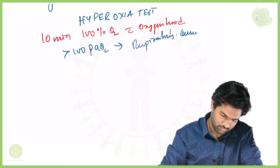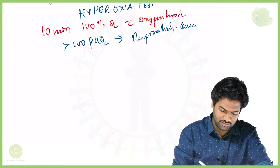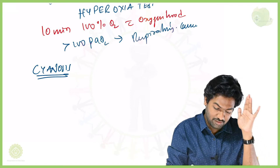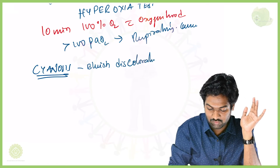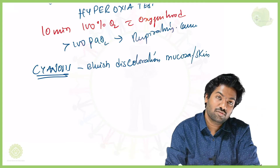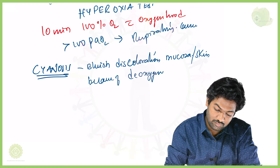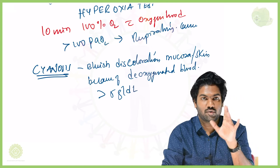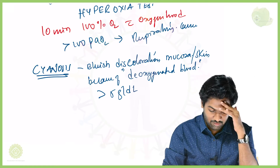Before going further, let's define cyanosis. Cyanosis is the bluish discoloration of the mucosa or skin due to deoxygenated blood. Importantly, the deoxygenated blood must be more than 5 grams per dL — this is a very important point to remember.